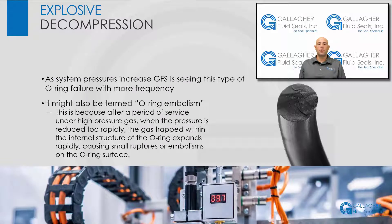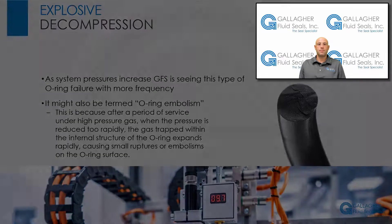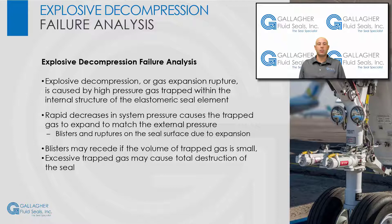The next failure mode is called explosive decompression. As system pressures increase, Gallagher Fluid Seals is seeing this type of O-ring failure with more frequency. It might be termed O-ring embolism in that after a period of service under high pressure gas, when the pressure is reduced too rapidly, the gas becomes trapped within the internal structure of the elastomeric seal element. Rapid decreases in system pressure cause the trapped gas to expand to match the external pressure, and this expansion causes blisters and ruptures on the seal surface.